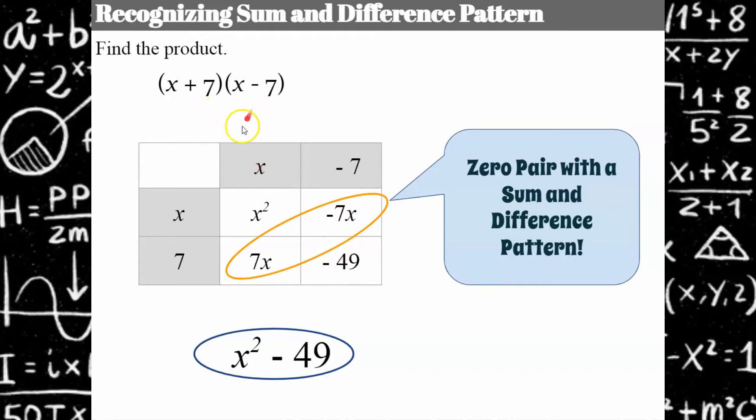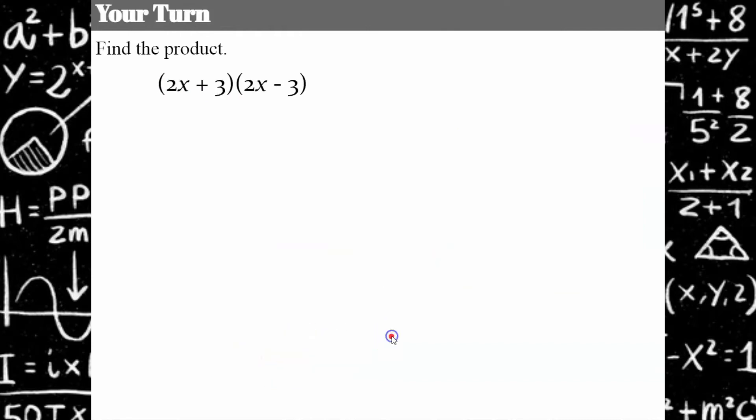And then I'm left with X squared and negative 49. However, if I had recognized I had a sum and difference pattern, I could have said, okay, first term, X squared, second term squared, 7 squared is 49, and you subtract them.